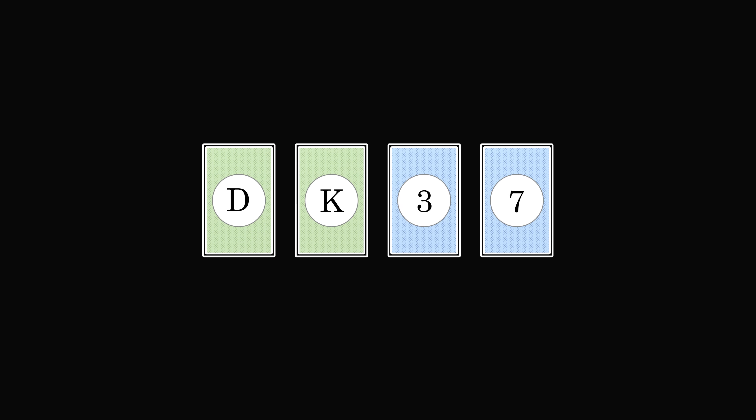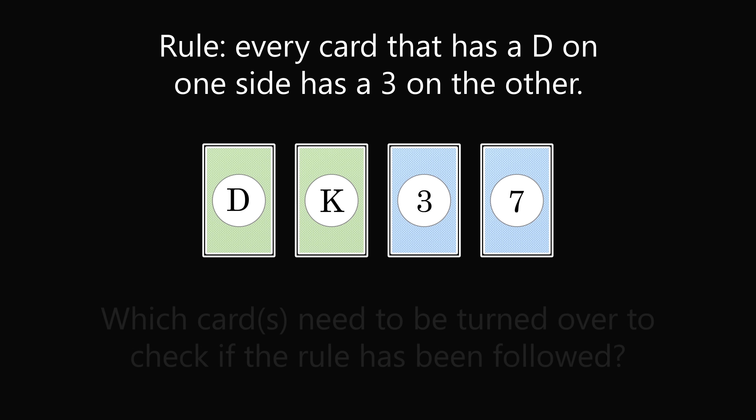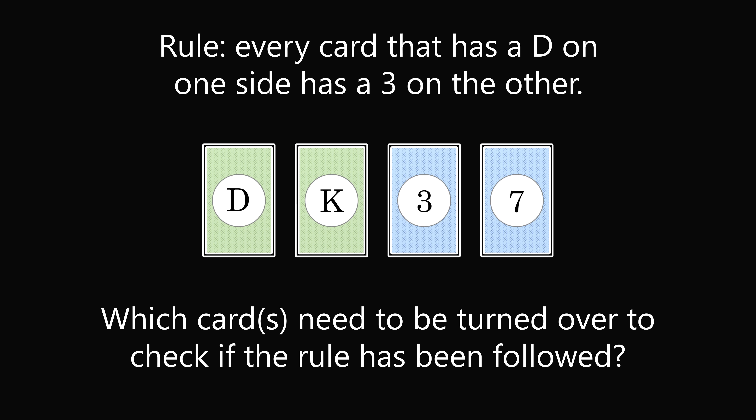In front of you are four cards: D, K, 3, and 7. The cards are manufactured according to a rule: every card that has a D on one side has a 3 on the other. The question is, which card or cards need to be turned over to check if the rule has been followed?